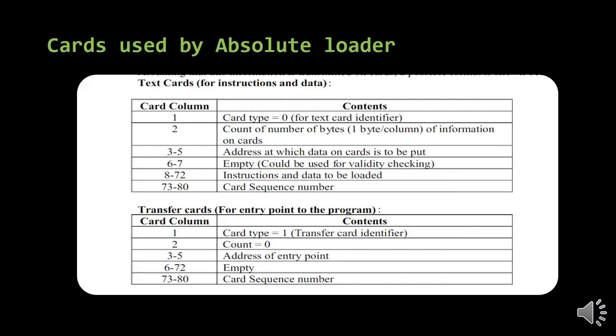A text card contains the actual instruction that needs to be loaded along with its memory location. For example, if I have an instruction 'add register B' and this instruction should be stored at location 100, that address will be mentioned at column numbers 3 to 5, and the actual instruction will be placed at column numbers 8 to 72. Column numbers 73 to 80 always hold the card sequence number.